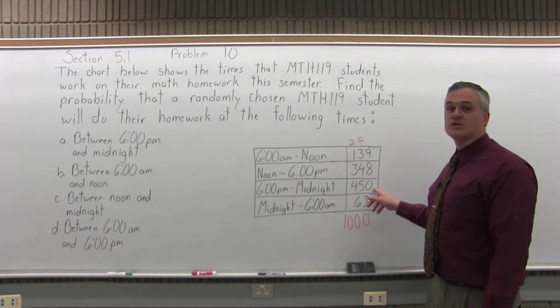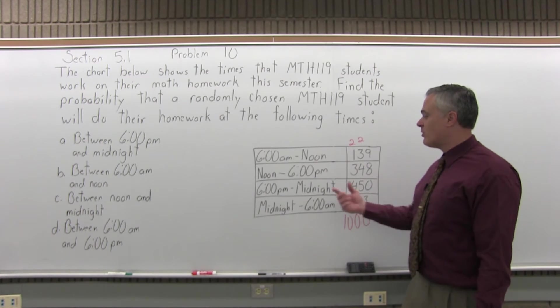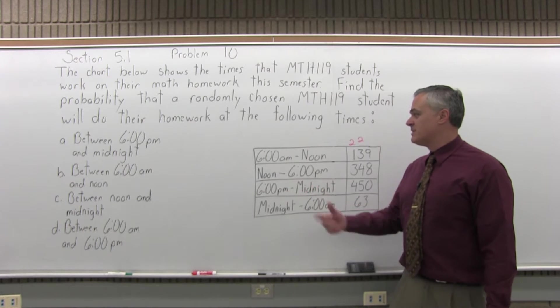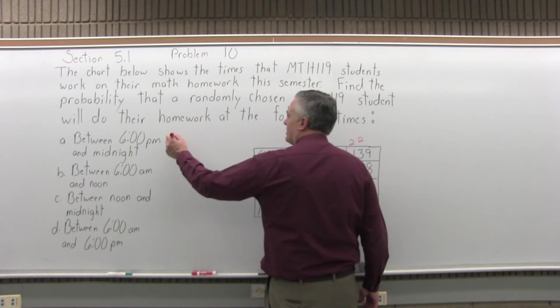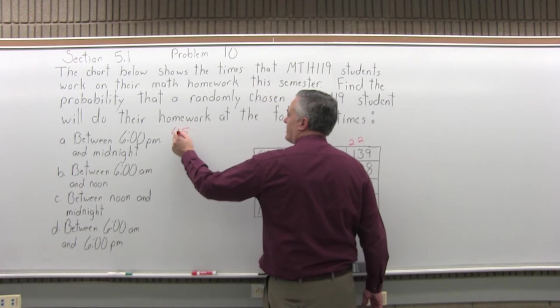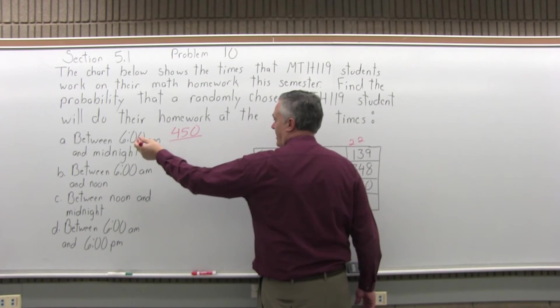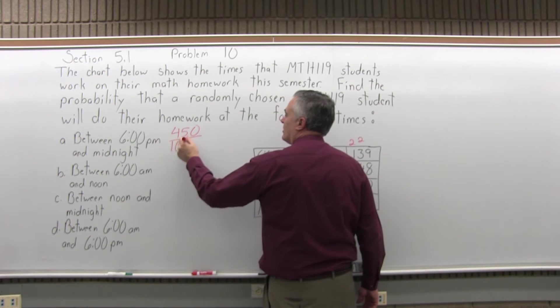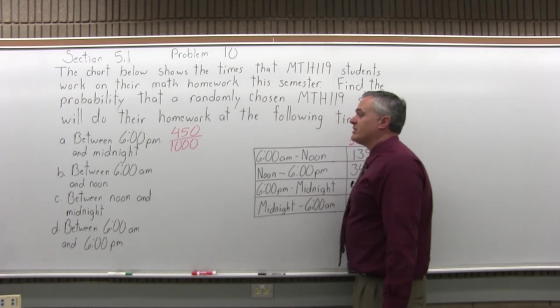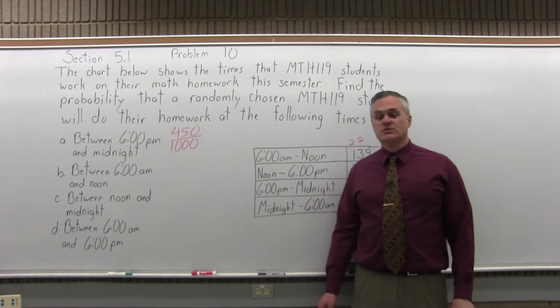Out of the 1,000 students, 450 of them do their homework at the time interval between 6 p.m. and midnight. So the probability that any one student chosen at random does their homework at that time between 6 p.m. and midnight would be 450 out of the 1,000 students all together.